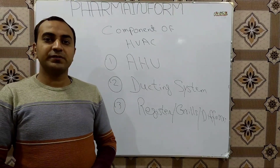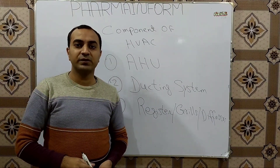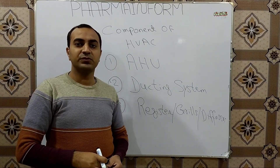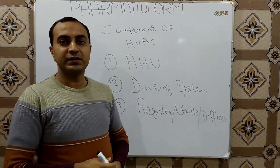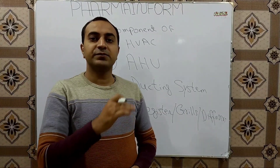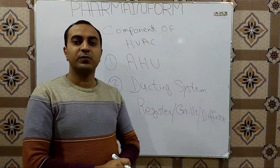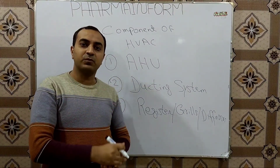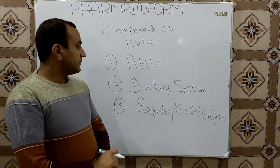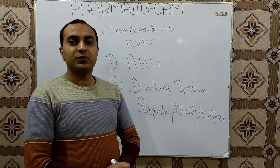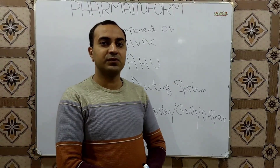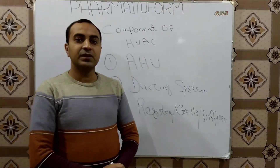The AHU, or Air Handling Unit, is basically the main component — we will discuss in the next video what an AHU is and the components of an AHU in detail. Then we will discuss the ducting system, which basically supplies conditioned air from the AHU to the rooms, and then returns air from the rooms back to the AHU for reprocessing. We will discuss the types of ducts, shapes of ducts, materials of construction, and classification of ducts.